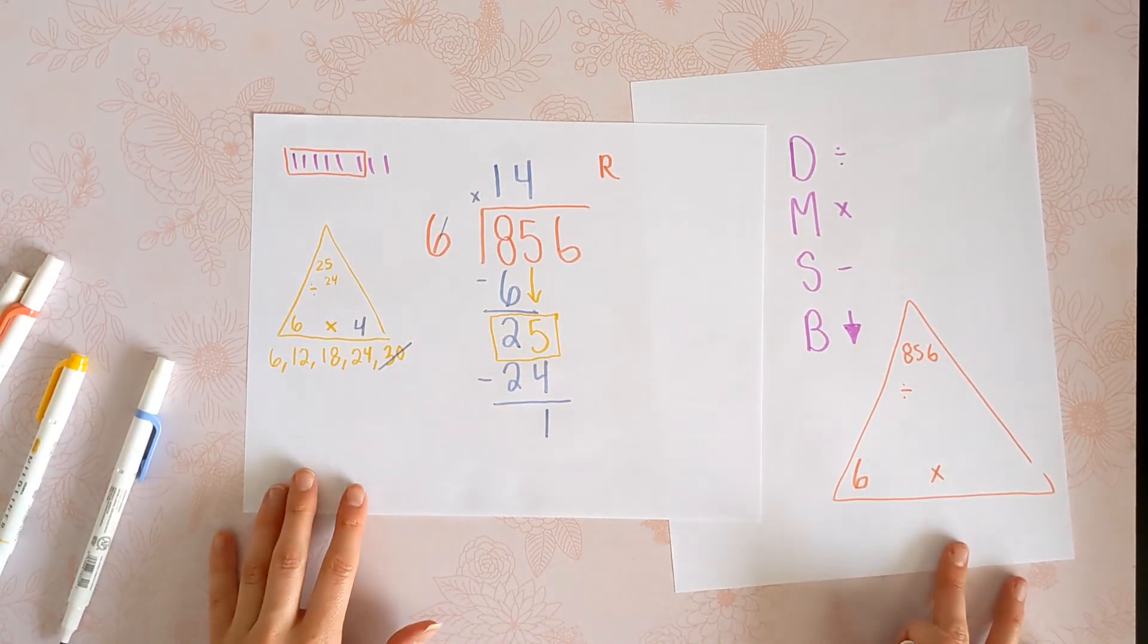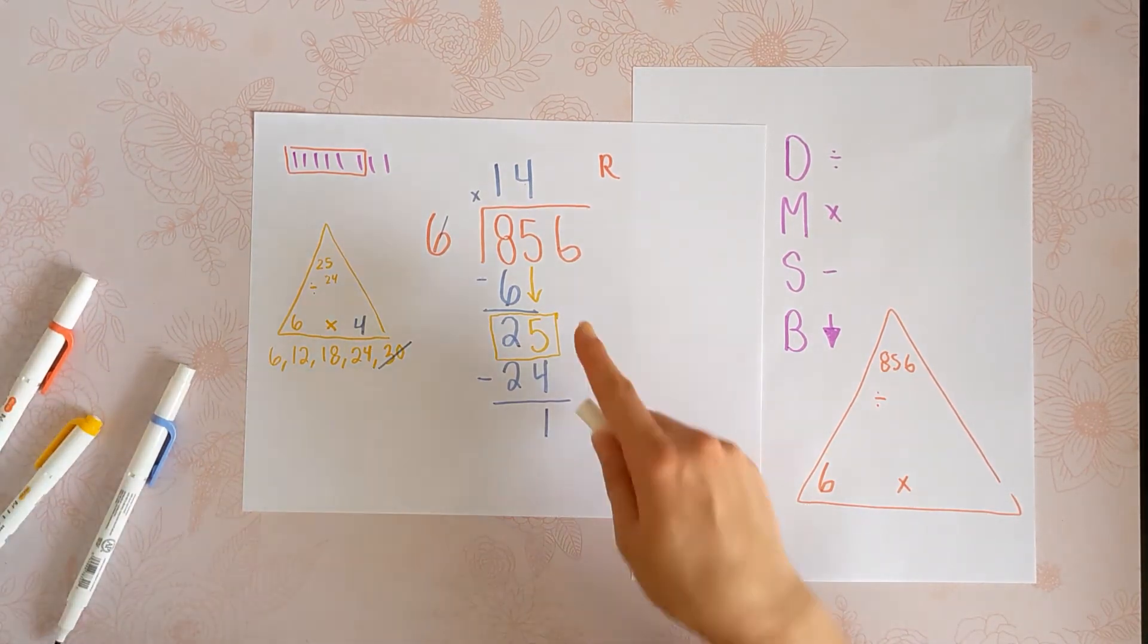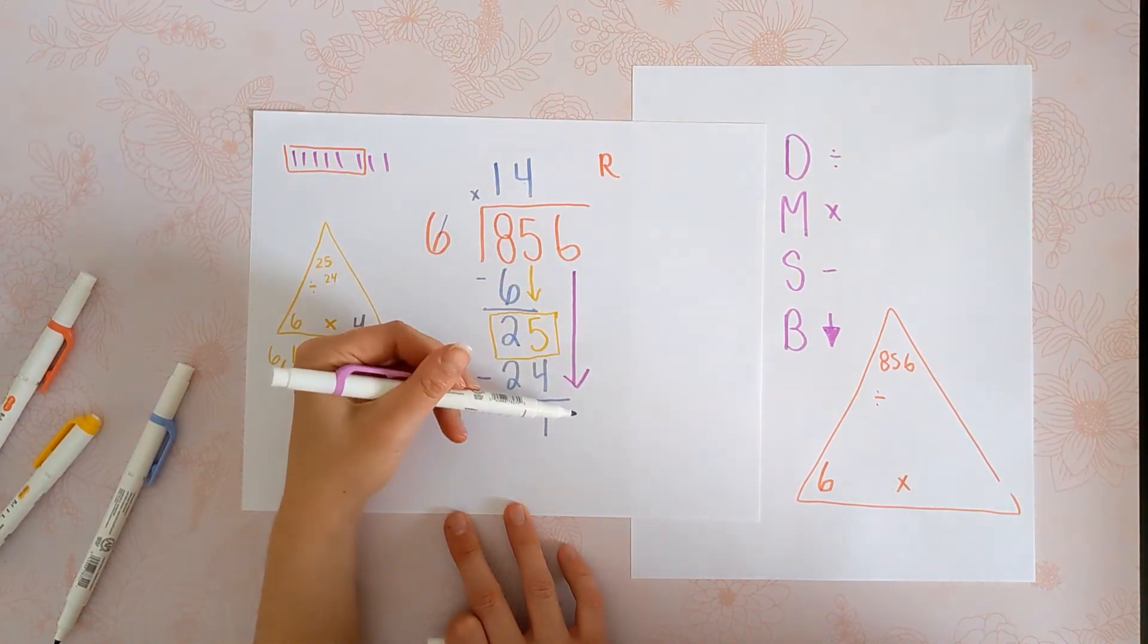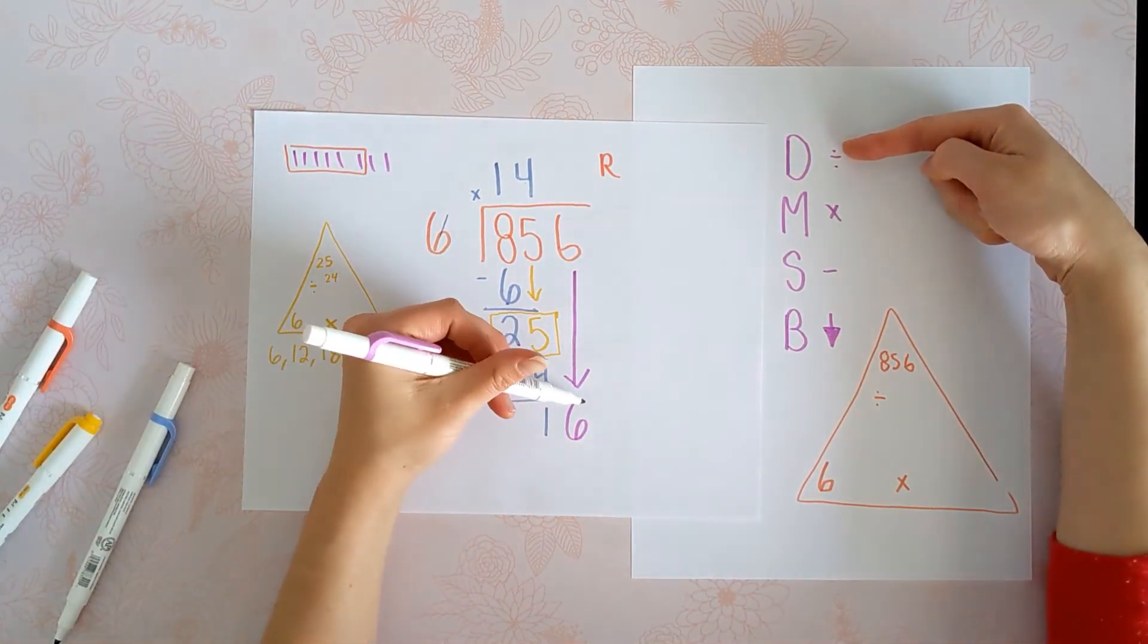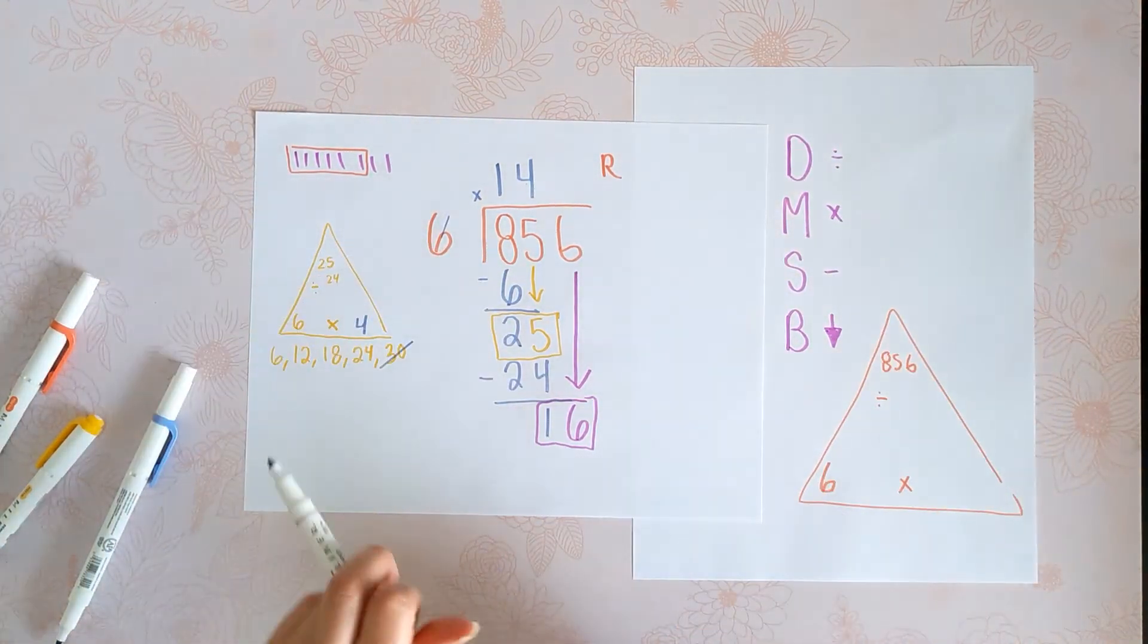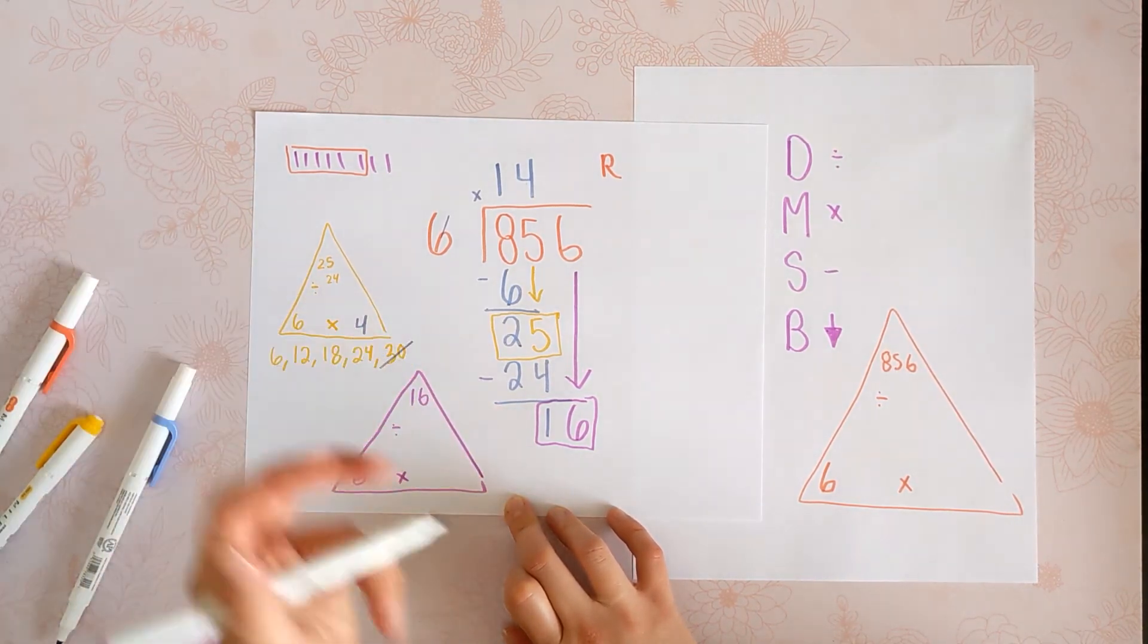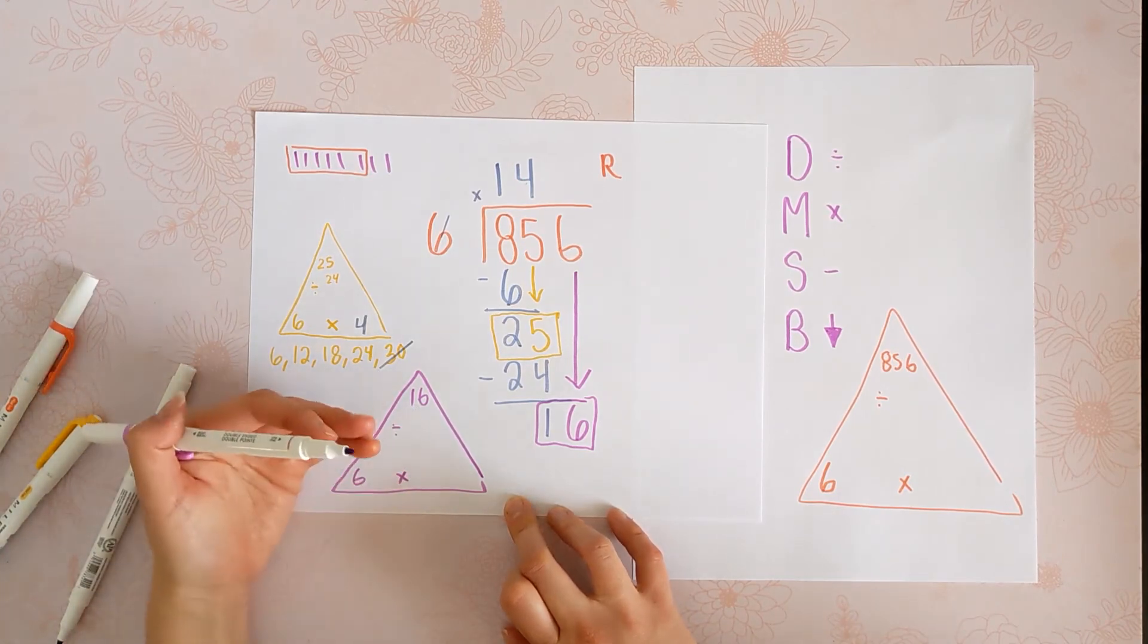What's the next step? Bring down. There's only one more thing to bring down, the 6. We're going to bring it down to the last thing we touched, which is that 1. And now we're going to divide. 16 divided by 6. So 6 times what gets you close to 16? Or how many times can you skip count your 6s until you hit under 16 without going over?